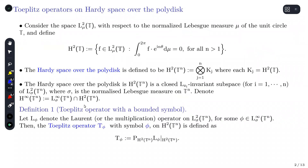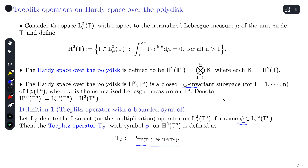Let's define what a Toeplitz operator is. For us, a Toeplitz operator starts with a Laurent operator — multiplication by a bounded function on L²(σ, Tⁿ) — and you compress this down to H²(Tⁿ), which is a zi-invariant subspace. That compression is our Toeplitz operator, and φ will be called the symbol.